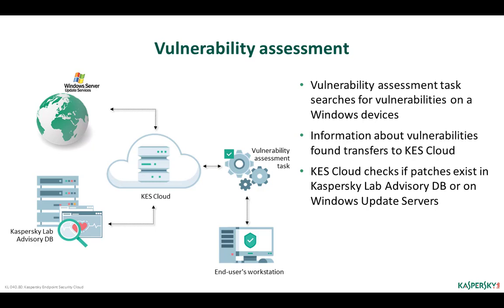Kaspersky Security Network Agent also gathers information about vulnerabilities. It automatically monitors program start and additionally scans all programs installed on the client computer according to a specified schedule. The information about vulnerabilities is obtained from the Kaspersky Lab Advisory DB, made up by Kaspersky Lab experts based on in-house analytics of the most typical threats and vulnerabilities to information systems. The information about vulnerabilities, available patches and updates is transferred from the client computers to the Kaspersky Endpoint Security Cloud server, where the administrator can view it, filter, and use for further vulnerability fixing.